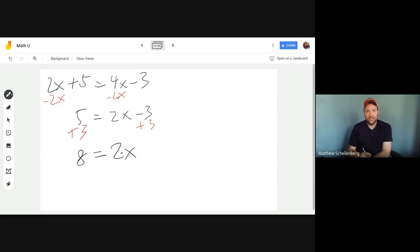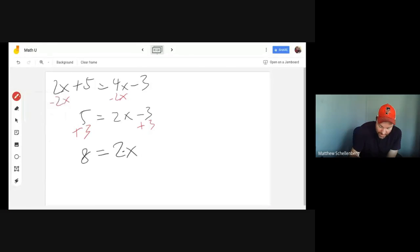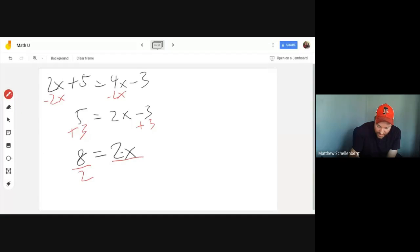So in order to get rid of it, I can do the opposite. The rule is always you do the opposite. What's the opposite of multiplication? Division. That's right. So we can divide both sides by 2. And so we're going to divide this by 2 and this by 2.